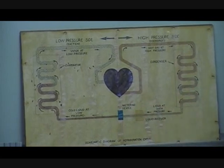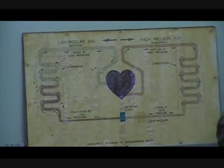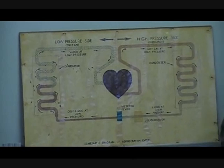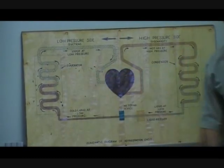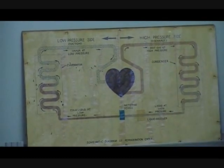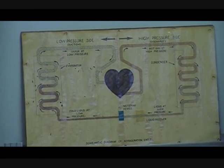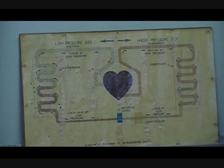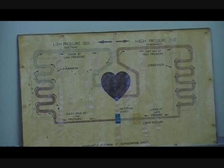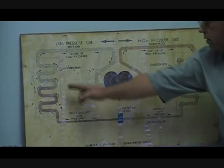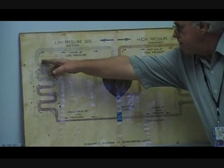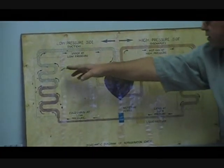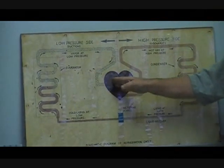The metering device is a throttle — it's a restriction. It meters the amount of refrigerant going into the evaporator. The evaporator is another heat exchanger. It's the point where it picks up the heat from whatever the product, the air, or whatever we're trying to remove the heat from. From the evaporator, it goes into the suction line, which connects the evaporator back to the compressor.